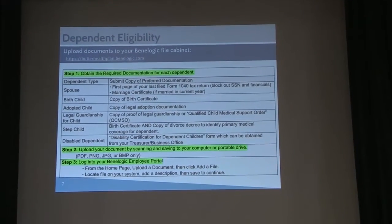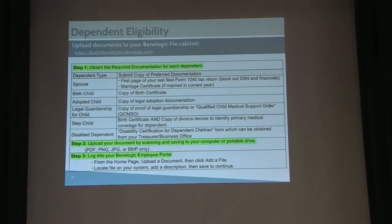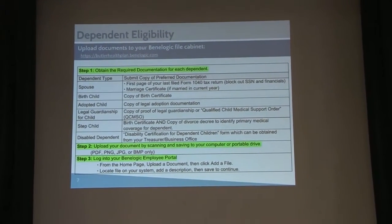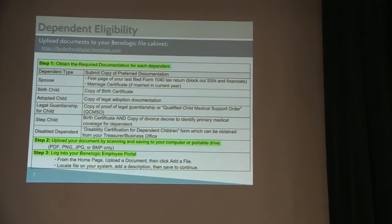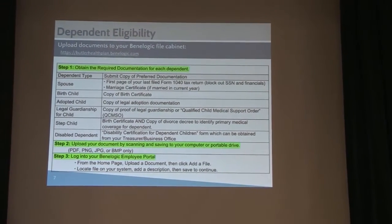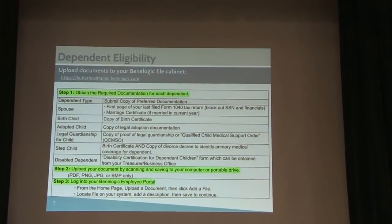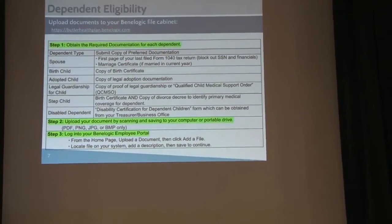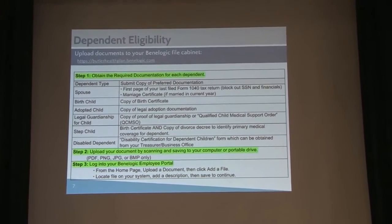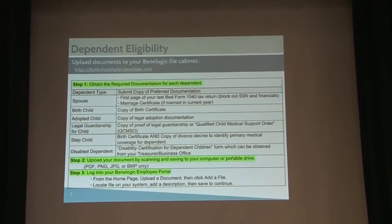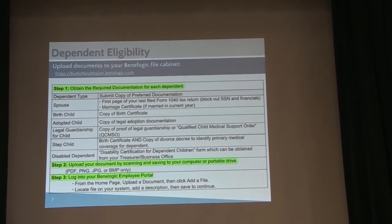There's a listing of the different circumstances for which you might have a dependent on the plan and the kind of documentation you'll need. If you have a dependent child, the easiest one is just to upload the birth certificate. What's a little bit different than before is for providing information about your spouse. The industry standard has changed from uploading a marriage certificate to uploading a copy of the first page of your annual tax return — your 1040 — because it's your annual verification that you remain married.